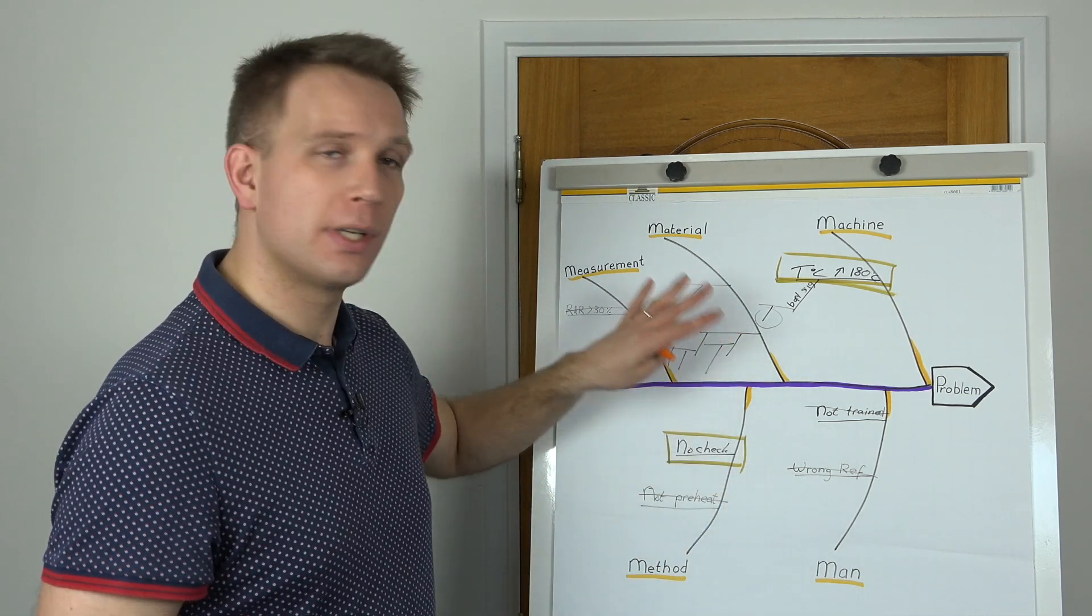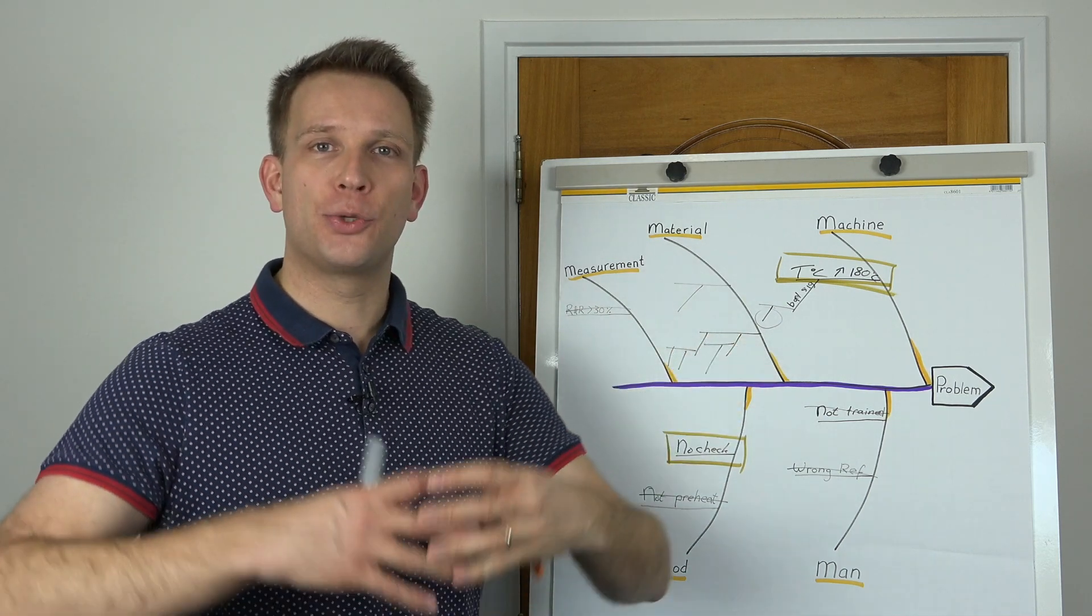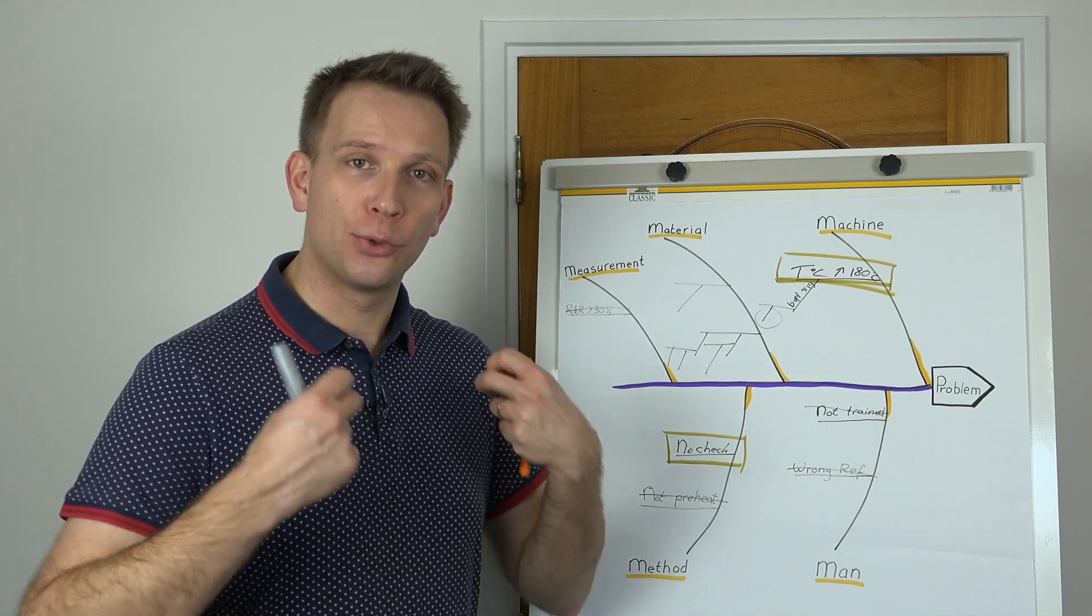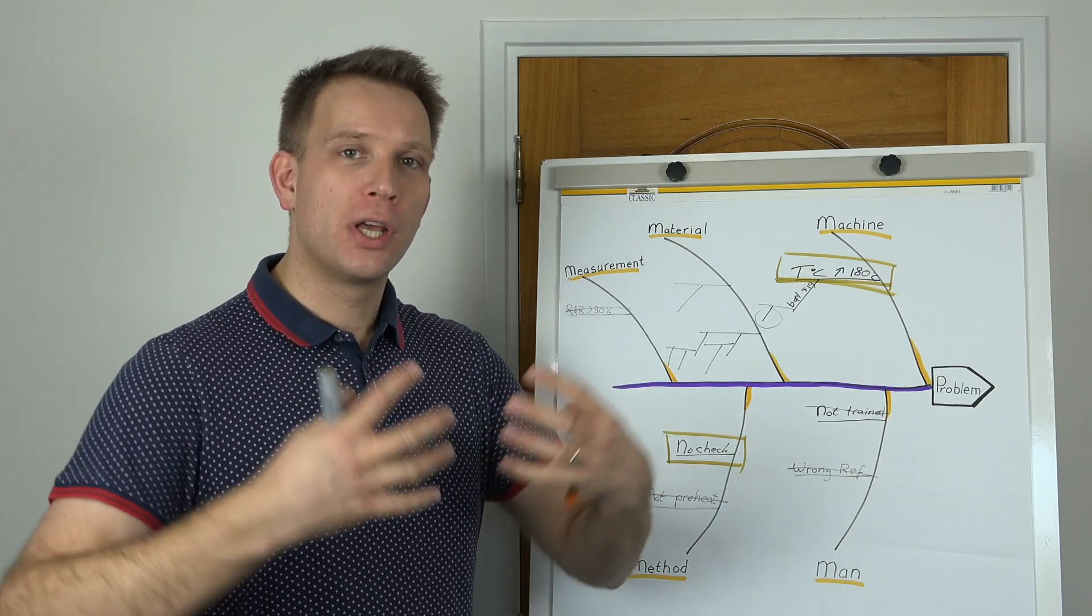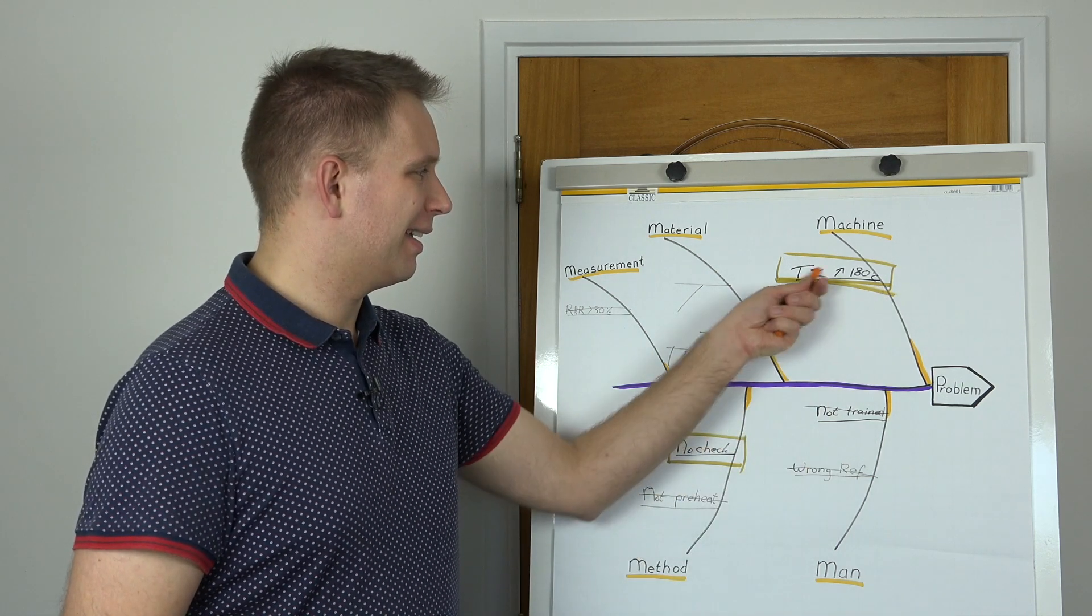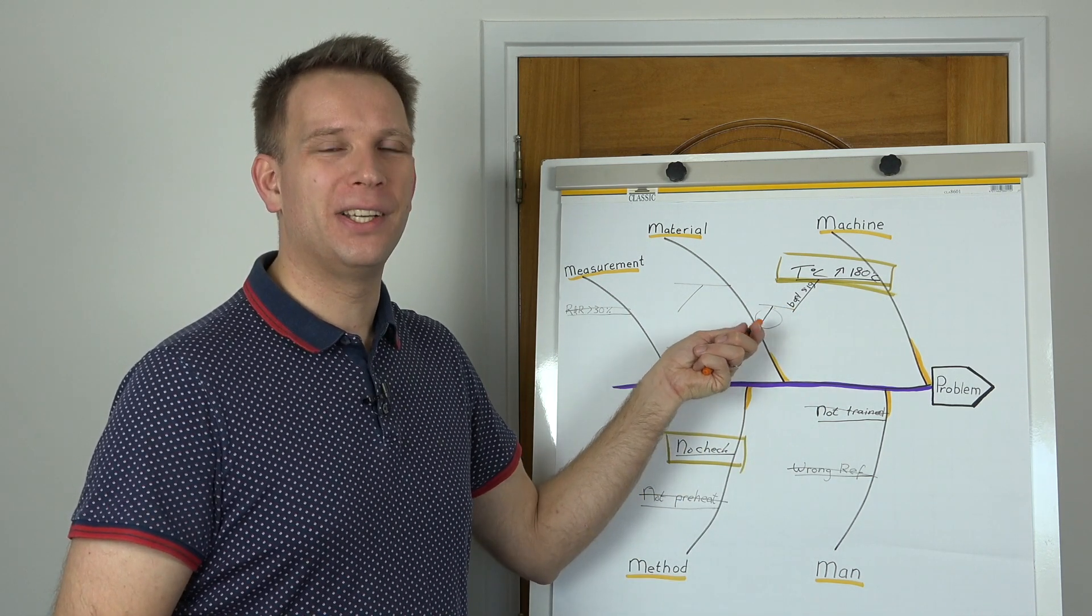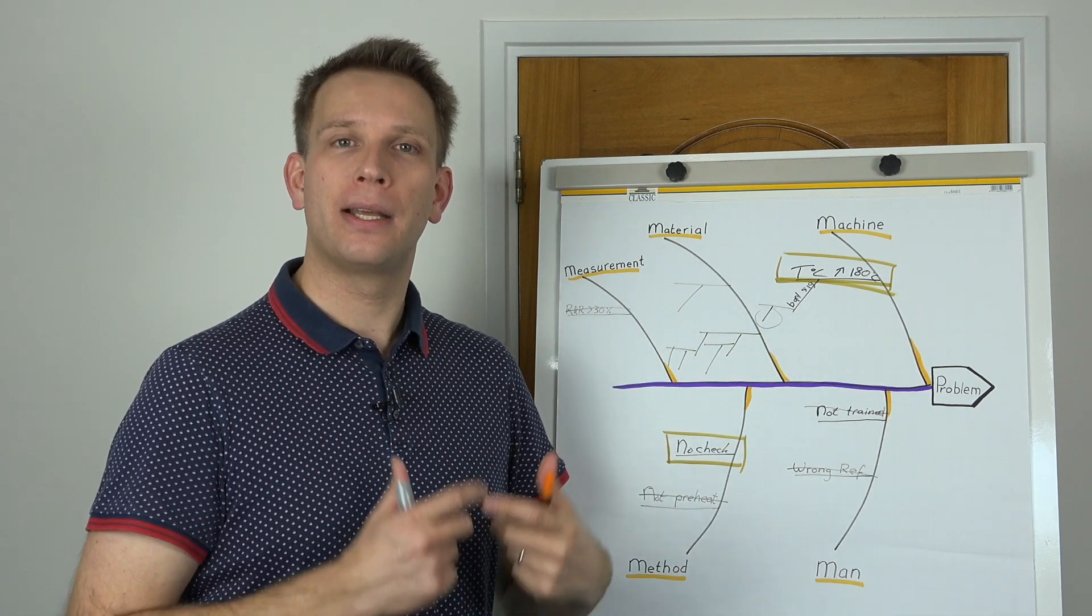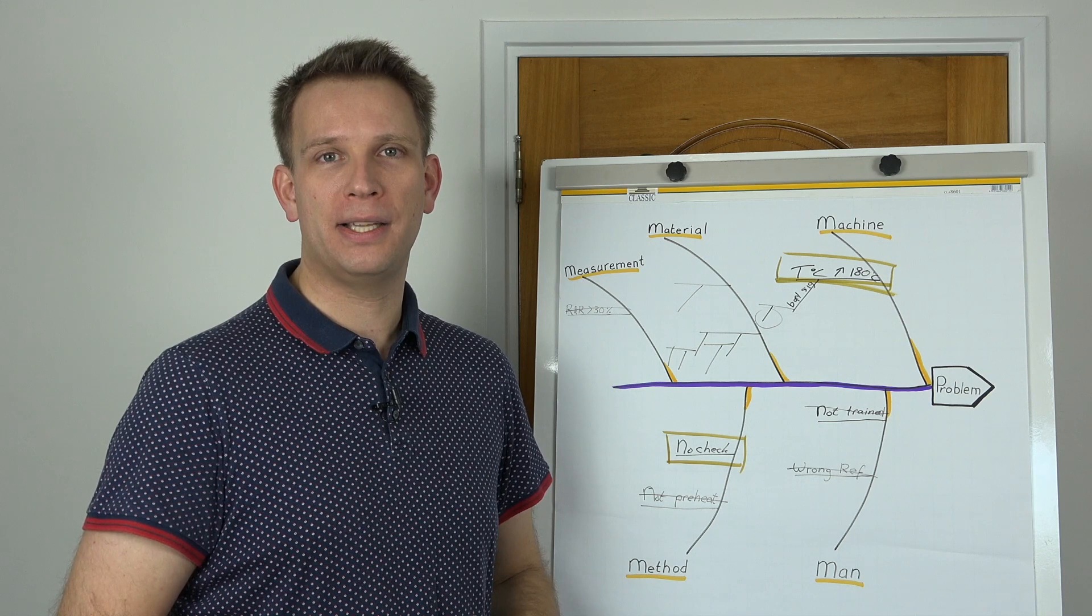But this fishbone diagram is to broaden your scope and to make sure that you are not missing any potential causes, and to really jerk the brains of everybody who's involved in your root cause analysis. Don't use it to find the root cause. That's the second step that we do separately in a number of 5 why analyses.